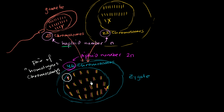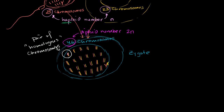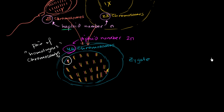How does that actually happen? Now that this zygote has the diploid number of chromosomes — referred to as 2n, where n is the haploid number and 2n is the diploid number — in the case of human beings, n is 23, so two times n would be 46 chromosomes.